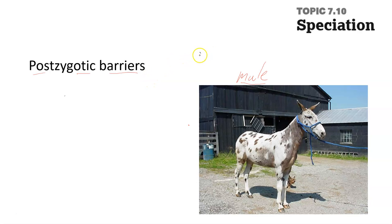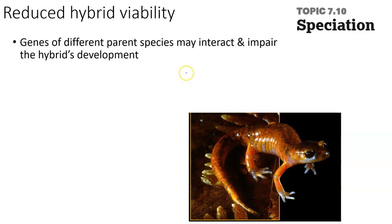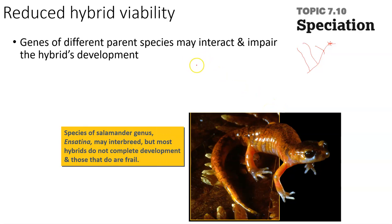Hopefully you wrote something down. We'll be visiting this in just a little bit, so keep this mule in mind. First, let's talk about what happens when two different species that are very closely related — if you were to draw your phylogenetic tree — these species would be extremely closely related, so closely related that they can actually have offspring. Post-zygotic barriers happen after a zygote forms, so the first thing we need to think about when we talk about post-zygotic isolating mechanisms...